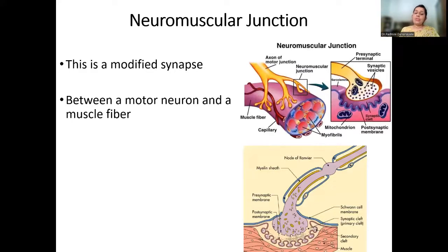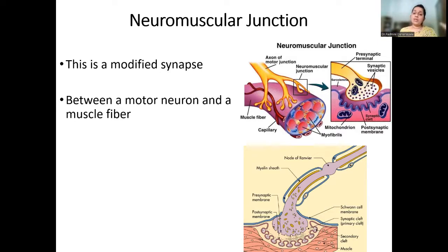What is the neuromuscular junction? Looking at its anatomical aspect, it is a modified synapse. While a regular synapse occurs between two neurons, here there is a motor neuron on one end and a muscle fiber on the other end. That is why we call it a modified synapse — it is between a motor neuron and a muscle fiber.